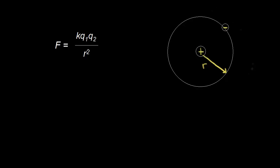Going back to the electron, let's say the electron is going around counterclockwise, and so the velocity of that electron at this point is tangent to the circle — that's the direction of the velocity vector. The electron has mass m, and the electron is going to feel a force. It's going to be attracted to the nucleus. Opposite charges attract, so this negatively charged electron is going to feel a force towards the center of the circle. That's a centripetal force, and in this case we're talking about the electric force causing the electron to move in a circle.